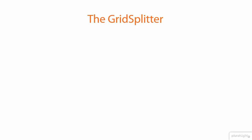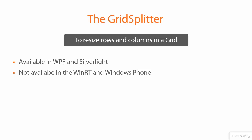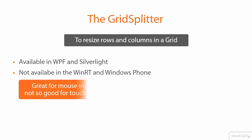The GridSplitter is a control that allows the user to resize the rows and columns in a grid. The GridSplitter is available in WPF and in Silverlight, but it's not available in WinRT and in Windows Phone. The reason for that could be that it's a great control for mouse input, but maybe it's not so good for touch input.